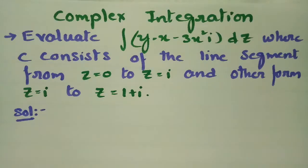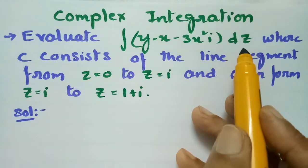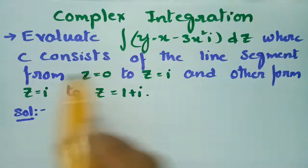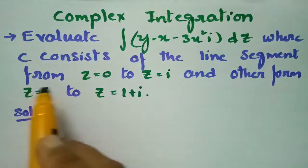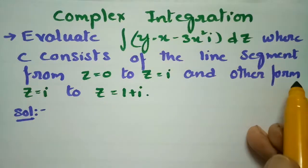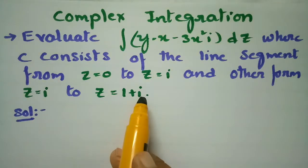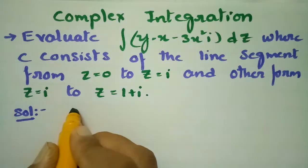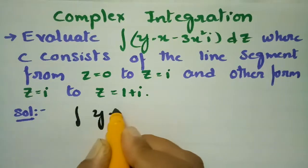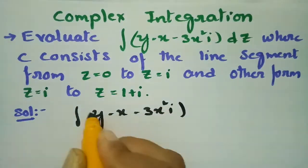In today's video I am going to evaluate a problem from complex integration. We have to evaluate the integral of (y - x - 3x²i) dz, where C consists of the line segment from z=0 to z=i, and the other from z=i to z=1+i.